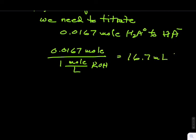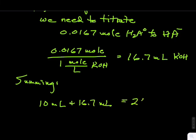Summing from the two calculations, we have 10 milliliters plus 16.7 milliliters equals 26.7 milliliters of KOH that must be added to the solution to raise the pH from 2.6 to 8.0.